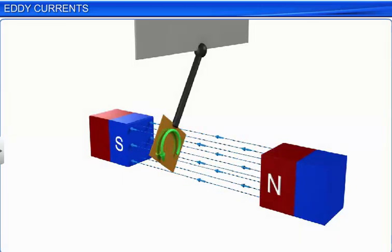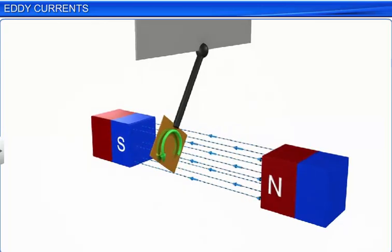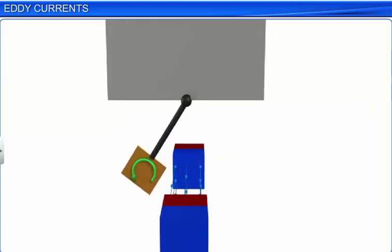Note that the magnetic field is directed from the north pole to the south pole of the magnet that provides the field. When viewed from the north pole side of the magnet, the induced eddy current is counterclockwise as the plate enters the field.